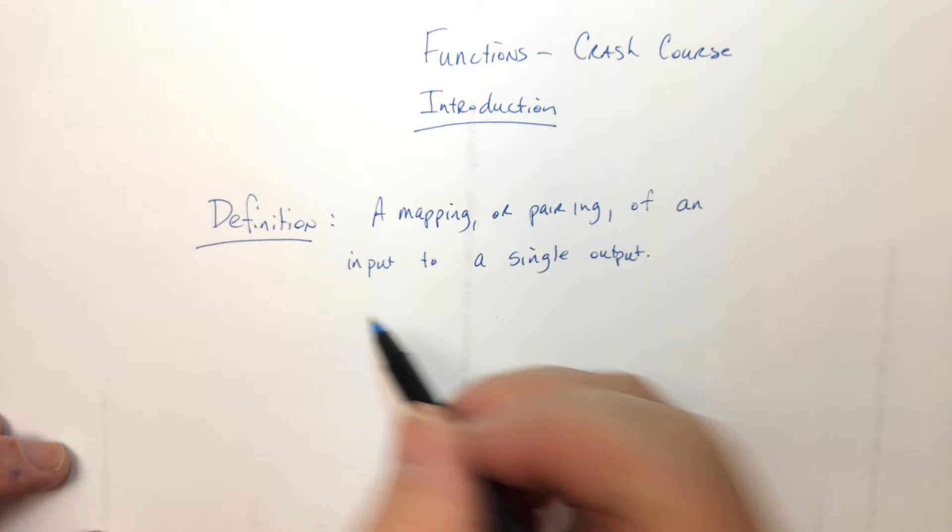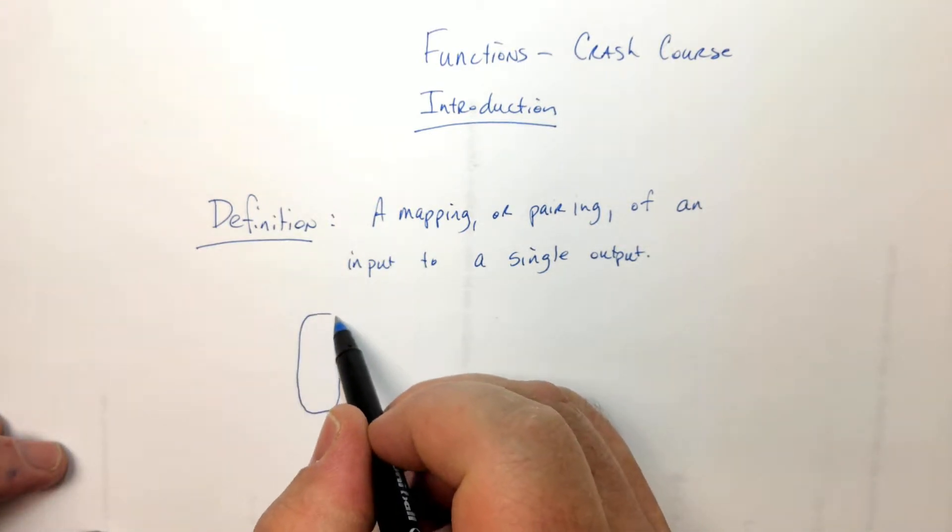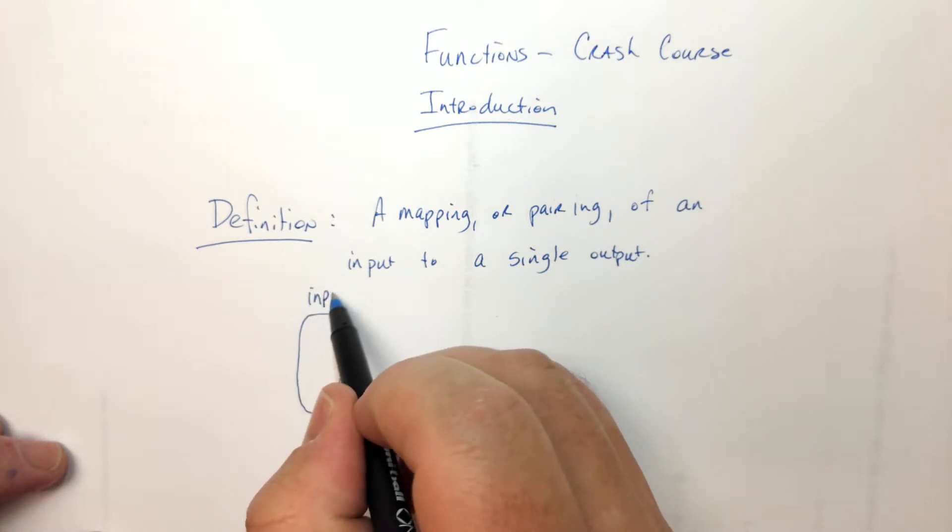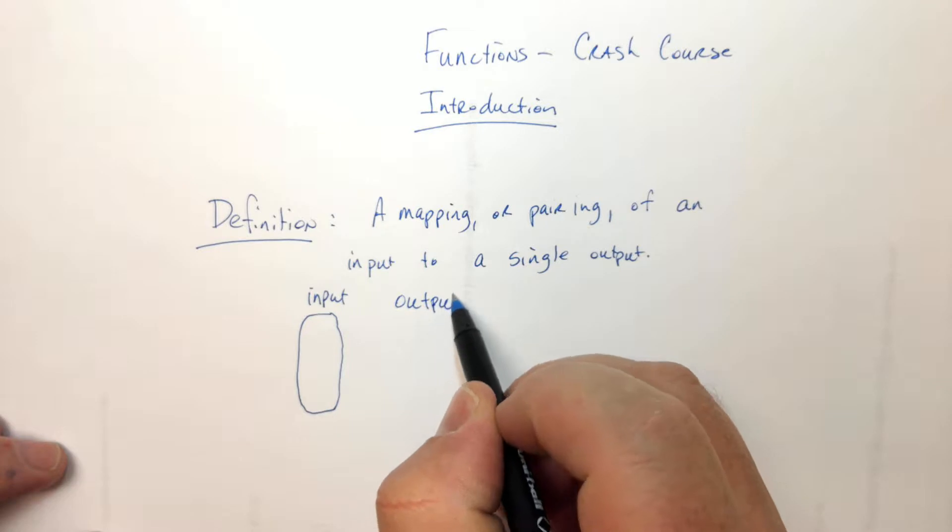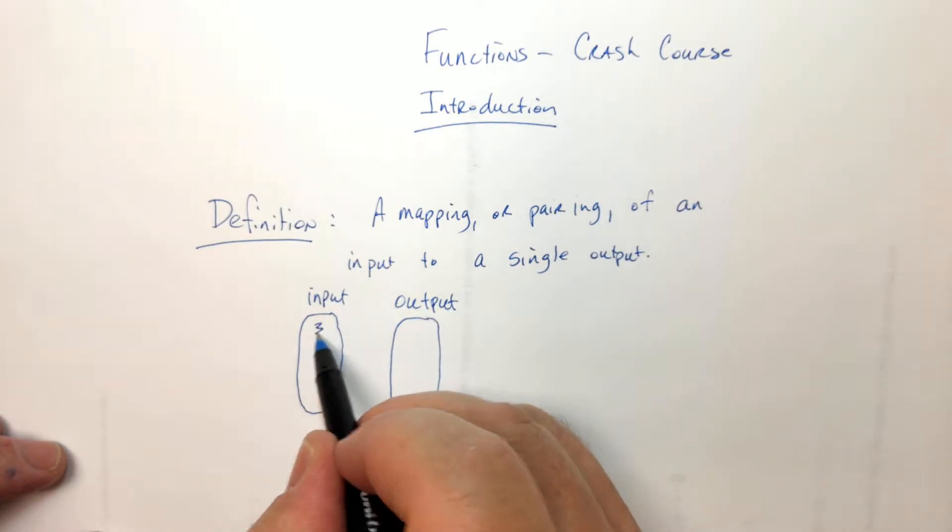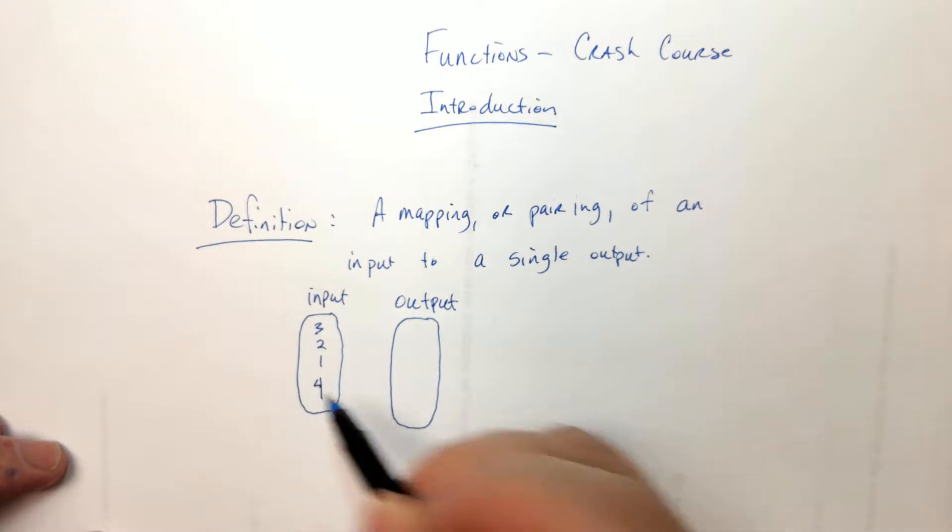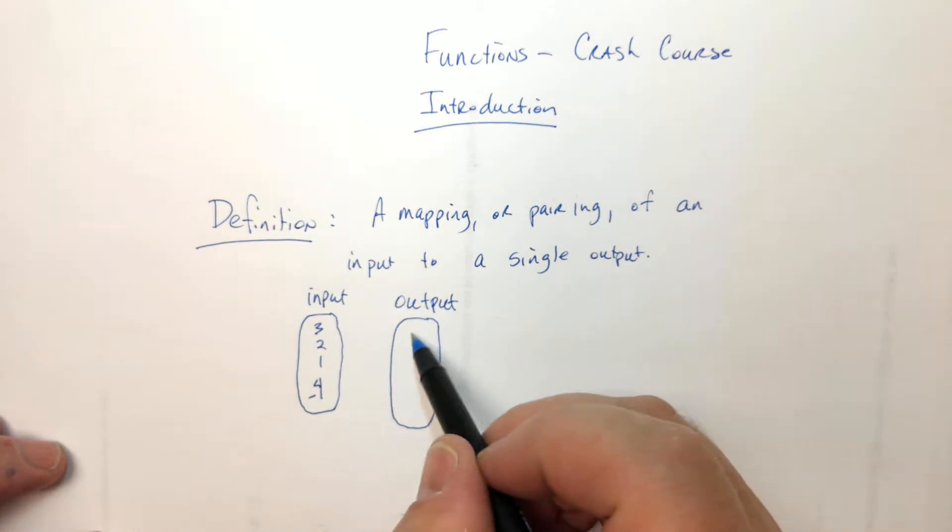You see that in a couple ways. Sometimes you have a map of an input to an output, and it'll literally be a mapping like this. So it might be boxes, it might be circles. So like 3, 2, 1, and let's say negative 4. These are the numbers you'd put into the function, and they're mapped to 0, 4, negative 3, and 7.